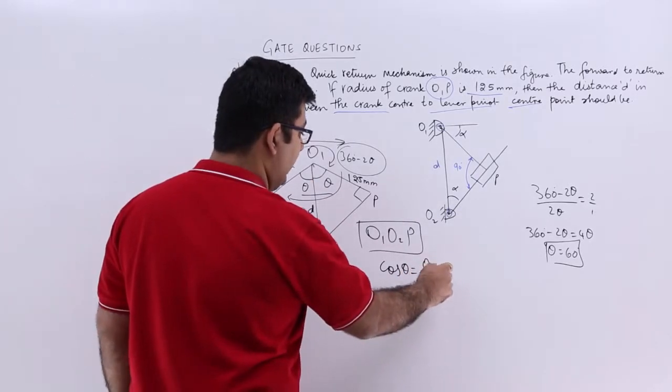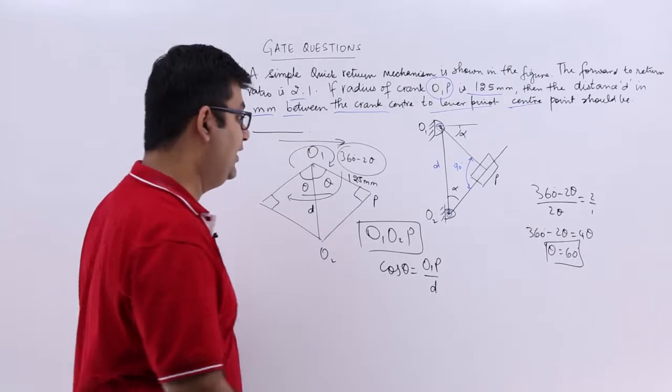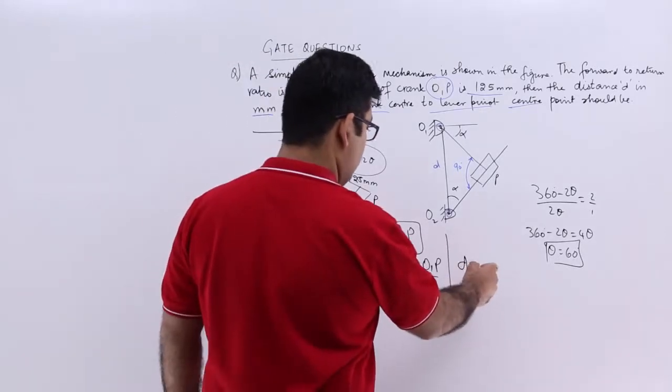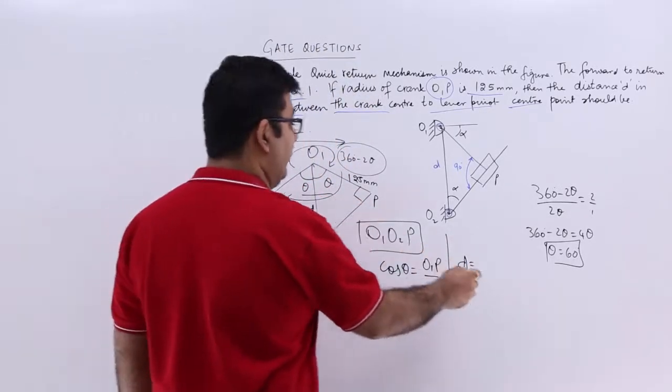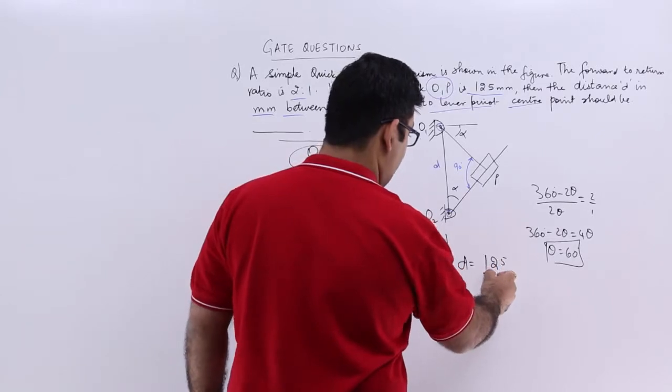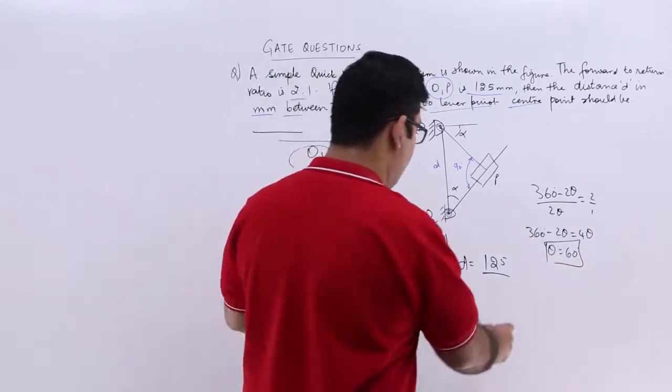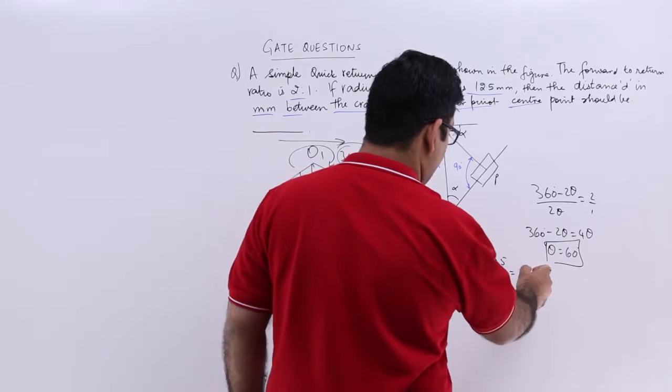It will be O1P upon d and d would be O1P, which is 125 upon cos 60, which is half. It will become twice on top, it will become 250.